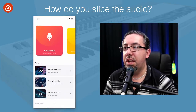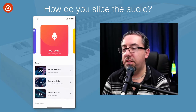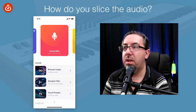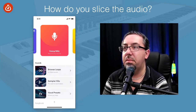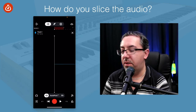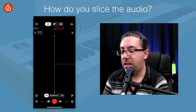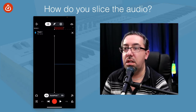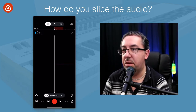So here we are in the app. There are a few different things that you can do to create audio. We're going to go with the voice mic, so I'm going to click on that red button. By default it creates a track for you and you get to record in your audio. So let's hit the big red button.